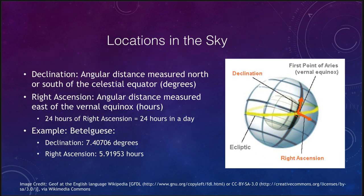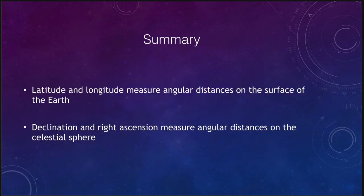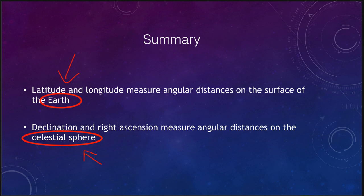To summarize: we looked at latitude and longitude, which measure positions on the surface of the earth, and declination and right ascension, which measure positions on the celestial sphere. Declination and latitude are very similar, as are right ascension and longitude — but remember that right ascension is measured in hours, whereas longitude is measured in degrees. That concludes our discussion of coordinate systems on the earth and in the sky. We'll be back next time for the next lecture — have a great day, everyone.